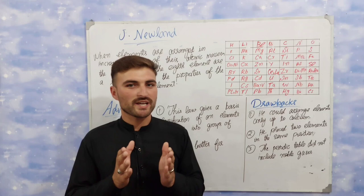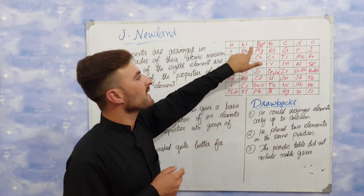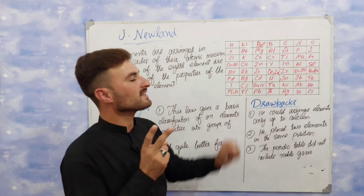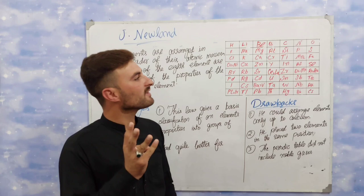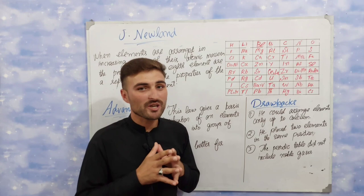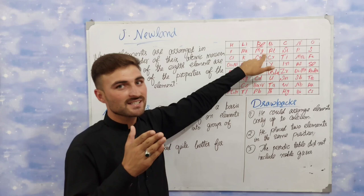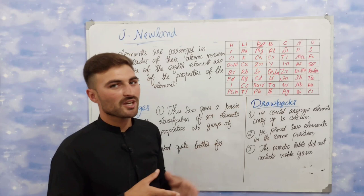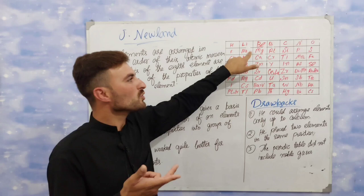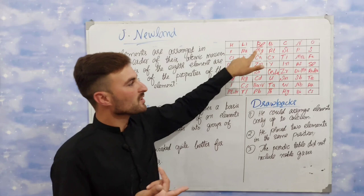We take Lithium as the first element, Beryllium as the second, Boron as the third, Carbon 4, Nitrogen 5, Oxygen 6, Fluorine 7, and Sodium 8. According to his rule, Sodium will have the same properties just like Lithium. Magnesium will have the same properties just like Beryllium. Potassium will have the same properties just like Sodium. Calcium will have the same properties just like Magnesium. Chlorine will have the same properties just like Fluorine.